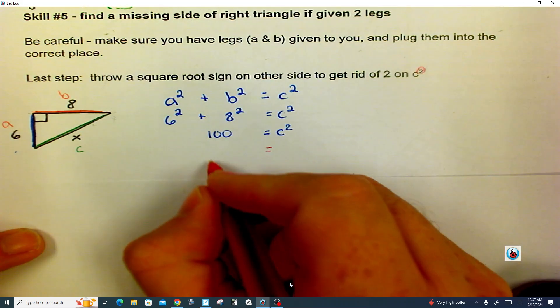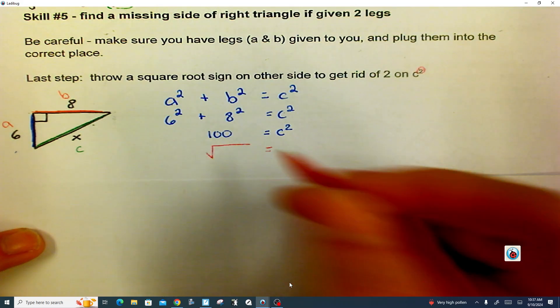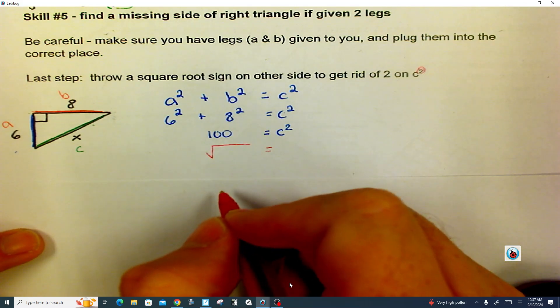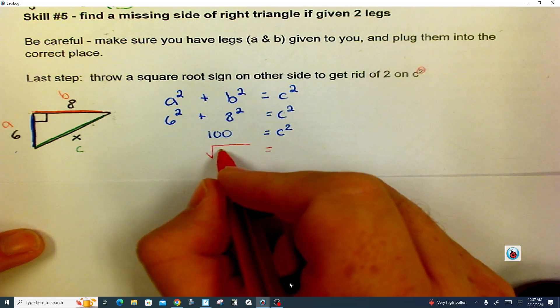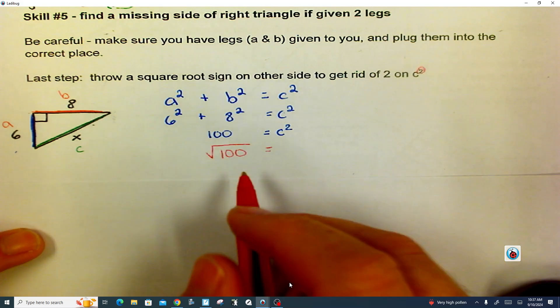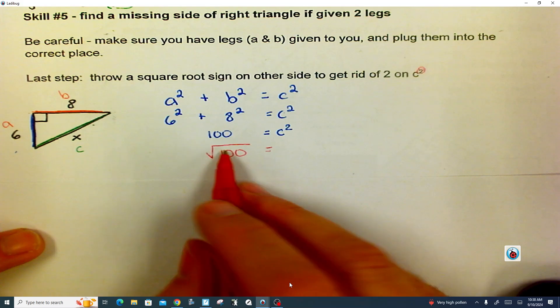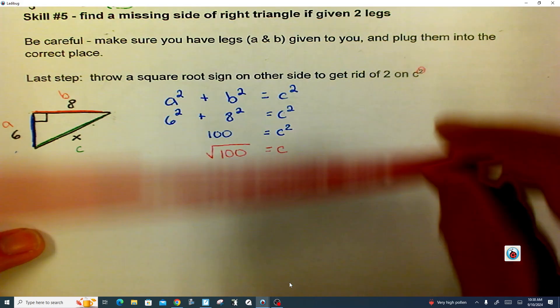It lands as a square root sign. It lands right there and it leaves the C right here.